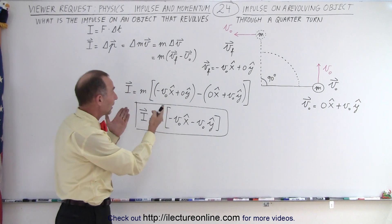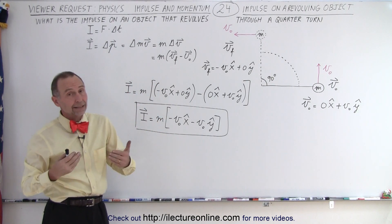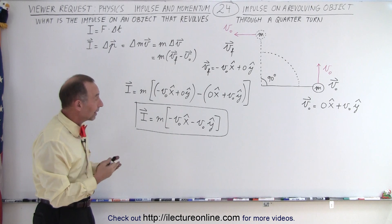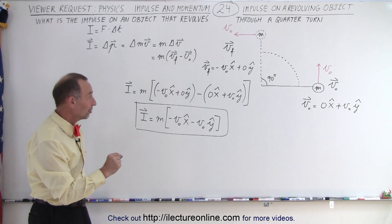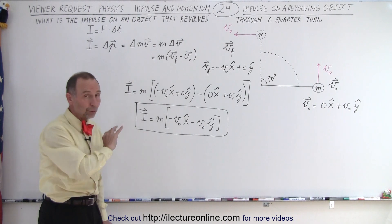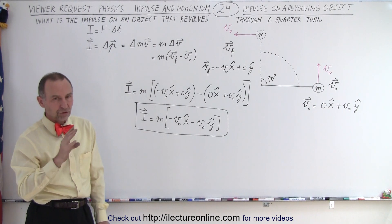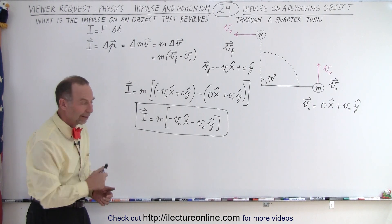But in this video, here, the principle should be clear that, again, the impulse can be calculated by calculating the change in the momentum and realizing that these are vector quantities, so we do have to take care of the direction of the velocities, and that is how we do it.